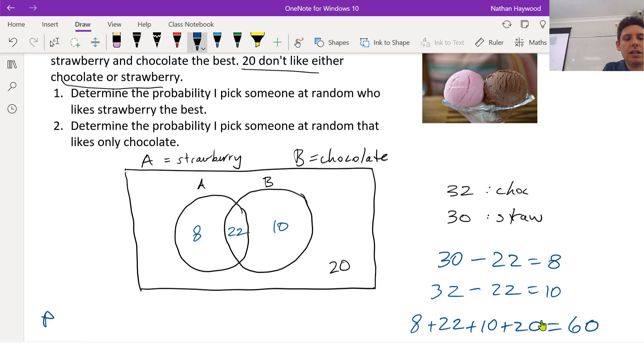Let's figure out the probability I pick someone that likes strawberry. So that's the notation P bracket strawberry equals, and then what do we do? You could also do P bracket A is also acceptable. So it's the number of people that like A over the number of the total set. And what's the symbol for total?